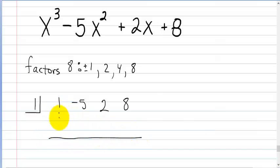First we're going to bring down the 1, and we're going to say 1 times 1 is 1. Then we're going to add these. So -5 plus 1 is -4. 1 times -4 is -4. 2 plus -4 equals -2. 1 times -2 is just -2. And now 8 plus -2 is going to give you 6. So this is not equal to 0, so we cannot use x equals 1. So x equals 1 is no good. Let's go ahead and try our next value.